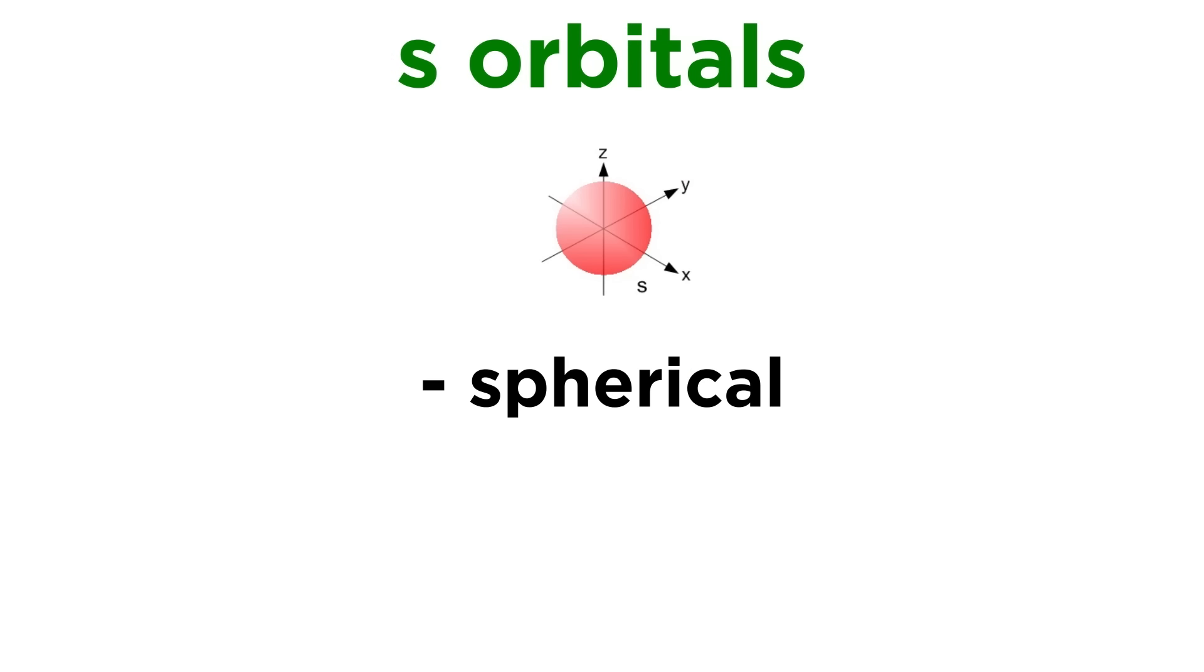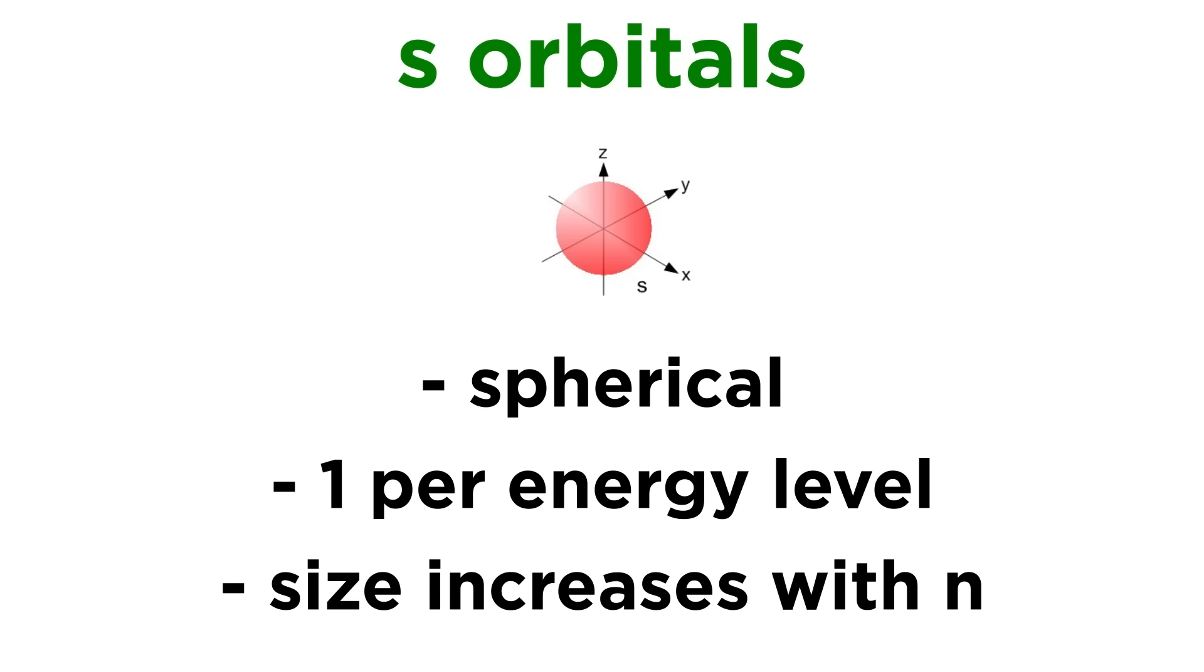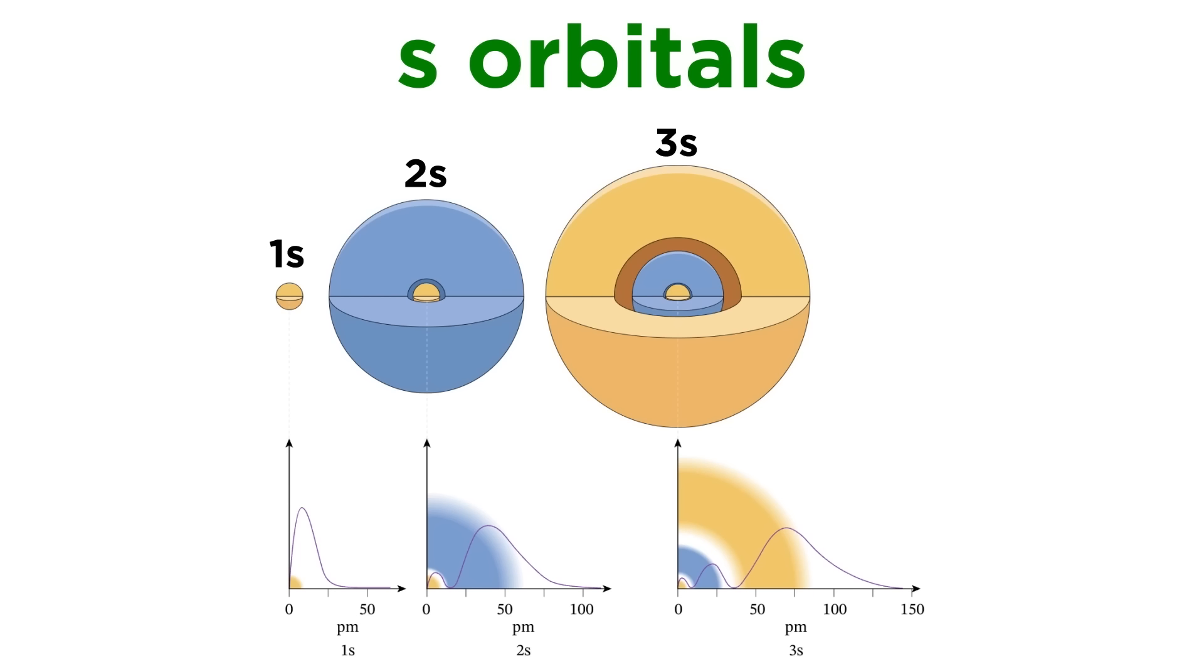The s-orbitals are spherical, with one of these per energy level. As the principal quantum number increases from n equals one to two to three and so forth, the orbital gets bigger, so the 1s-orbital is very tiny, the 2s is bigger, and so on. Each s-orbital will have one additional node than the previous, or region of zero probability density. So the 1s has no nodes, the 2s has one, and so forth.